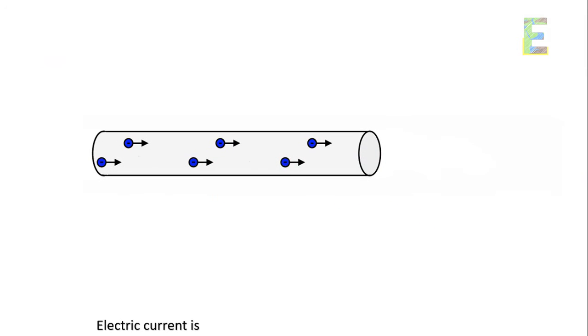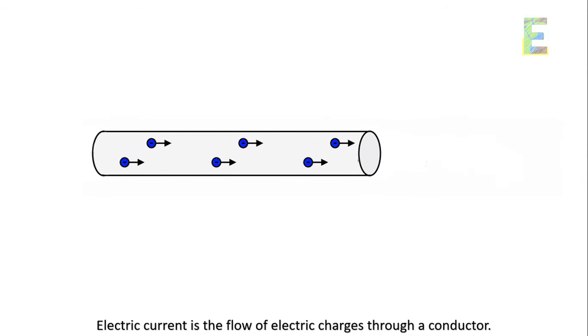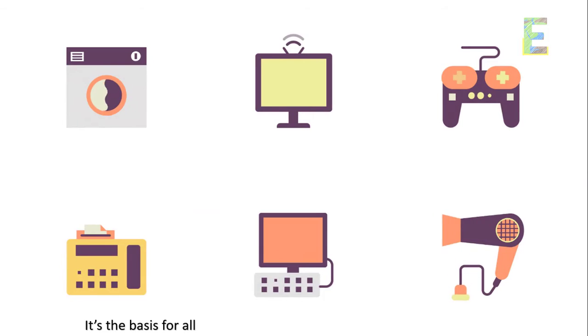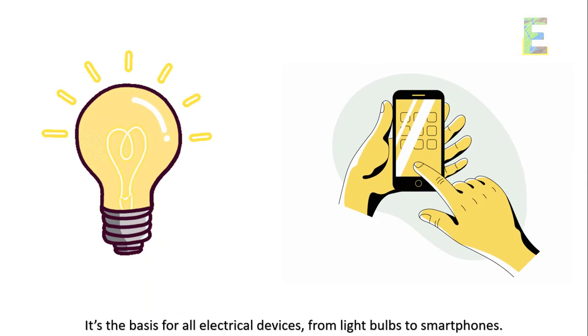Electric current. The electric current is the flow of electric charges through a conductor. It's the basis for all electrical devices, from light bulbs to smartphones.